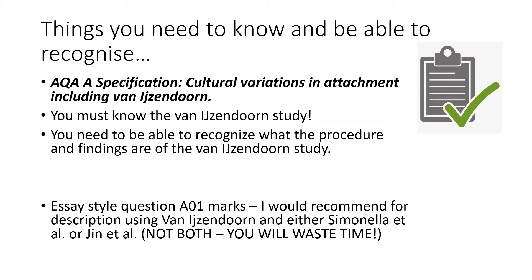You also see in your textbook other studies of cultural variations: the Simonella et al. study which is the Italian one, and the Korea study which is Jun et al. Those are not essential like Van Ijzendoorn, but if you had an essay-style question and needed AO1 marks you would use one of those two. I wouldn't suggest using both.